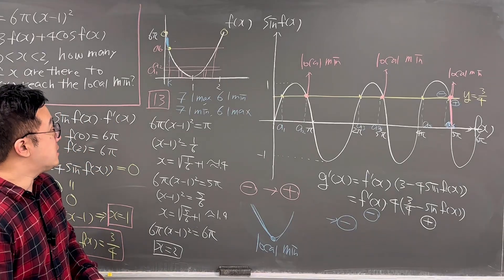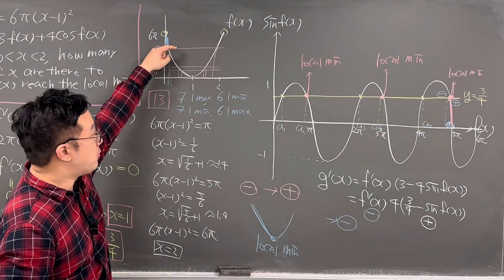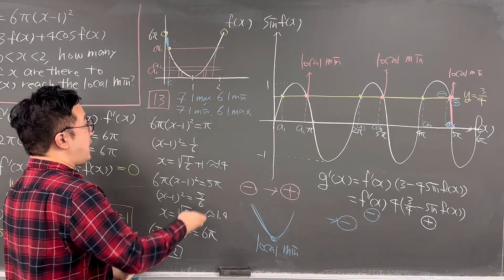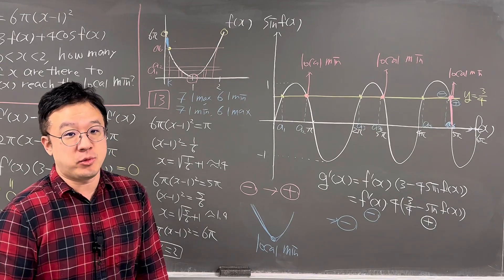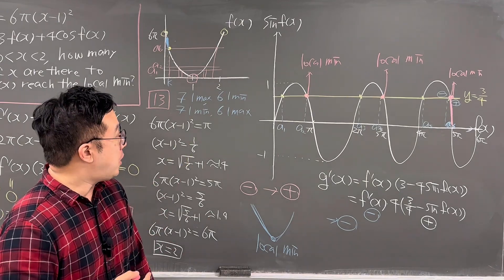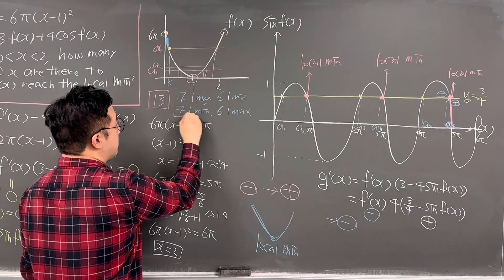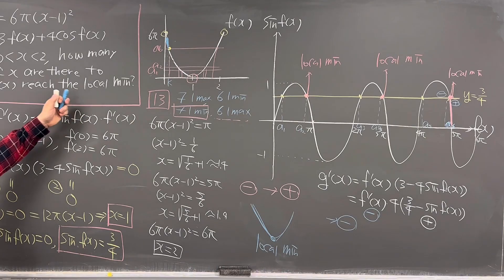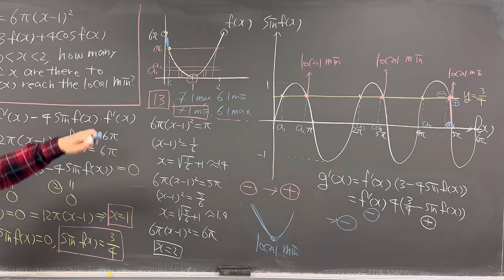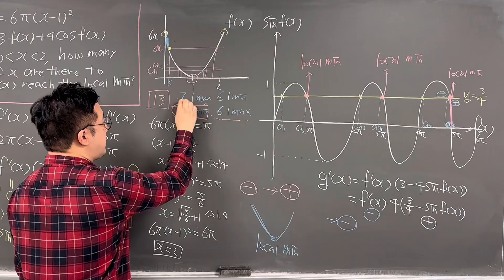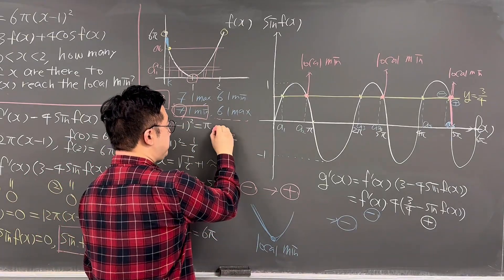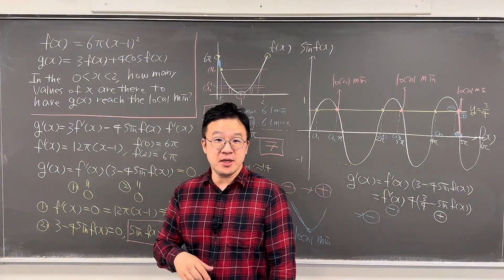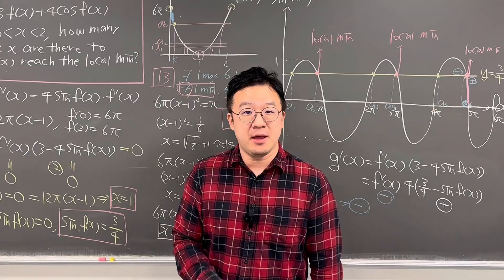Since a6 is a local min, the pattern goes: local min, local max, local min, local max, and so on. This also means x = 1 corresponds to a local minimum. So there are 6 local minima from the Case 2 intersections plus 1 from x = 1, giving a total of 7 local minima. The answer to this Korean SAT killer question is 7.